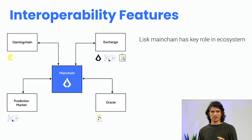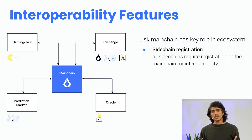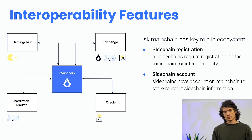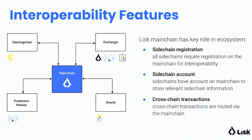Let me summarize the features of LISC interoperability, starting from the main chain. The LISC main chain will have a key role in the ecosystem. All sidechains will require registration on the main chain to participate in interoperability, and along with this registration, sidechains will receive an account on the main chain where all relevant information will be stored. All cross-chain transactions are routed via the main chain. Regarding custom tokens, the main chain will only support LISC tokens — custom tokens can still be created and used on sidechains, but they cannot be stored on the main chain since it has no way of knowing the protocol supporting them, so they will simply pass through the main chain to reach compatible sidechains.